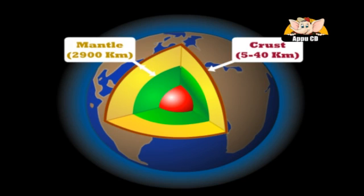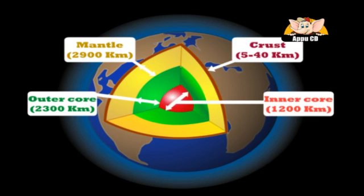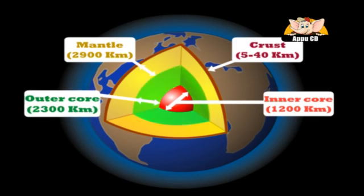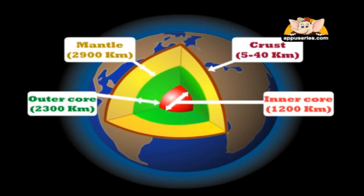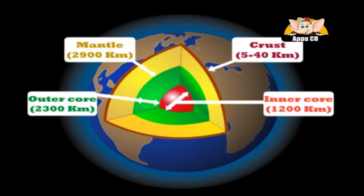The last layer is the core, which is separated into the liquid outer core and the solid inner core. The outer core is 2300 kilometers thick and the inner core is 1200 kilometers thick. The outer core is composed mainly of a nickel-iron alloy, while the inner core is almost entirely composed of iron.